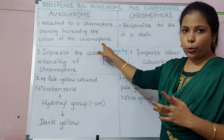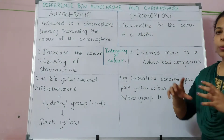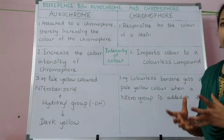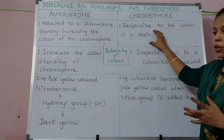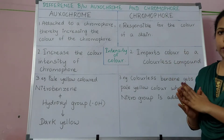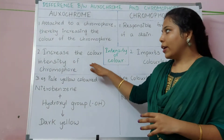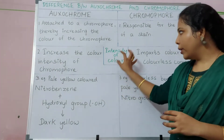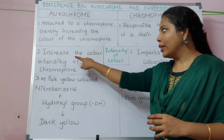Chromophore is a group of molecules that gives color to a stain. In a stain, only the chromophore is the colored part. The second point is about the intensity of color.